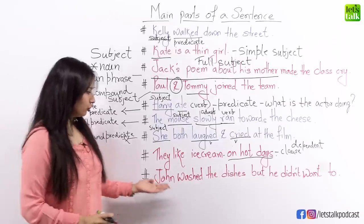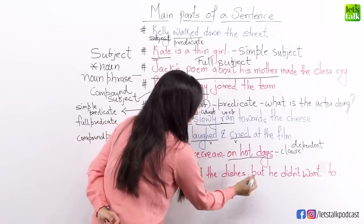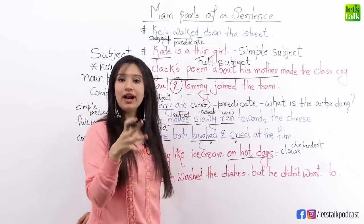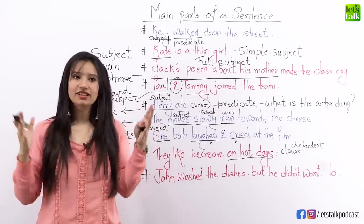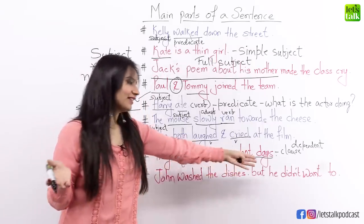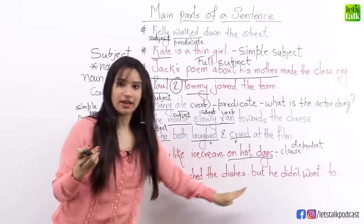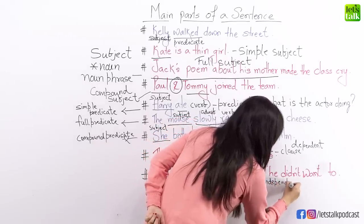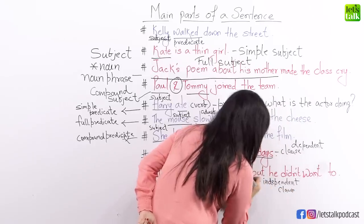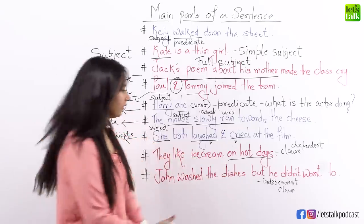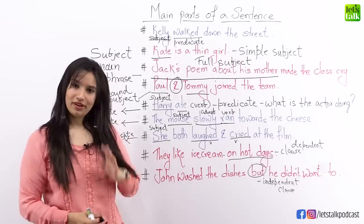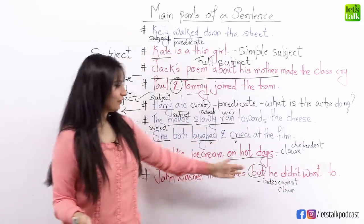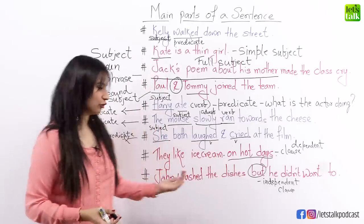Let's look at the next one: John washed the dishes — that's a complete sentence. But we add more: 'but he didn't want to.' Now, is 'he didn't want to' a complete sentence? Yes it is. That's why this is an independent clause — it is not dependent on the first part of the sentence. We join them using the word 'but.' John washed the dishes can stand by itself, and he didn't want to can also stand by itself, so the second part is an independent clause.